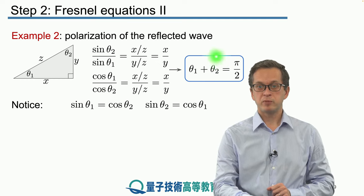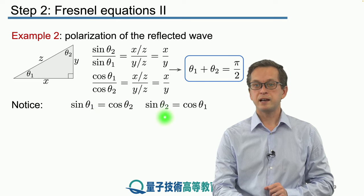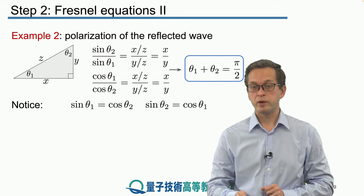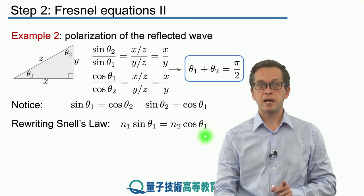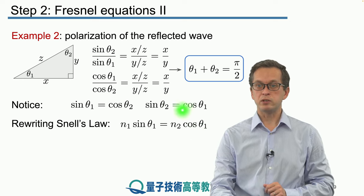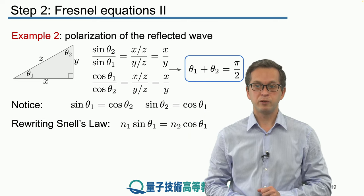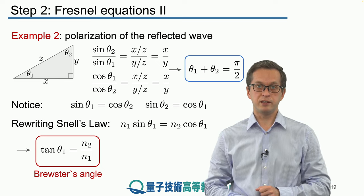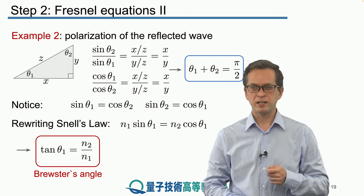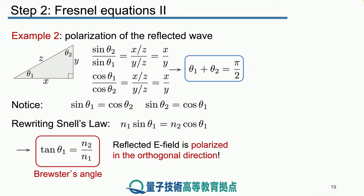We can see from these expressions that sin θ1 equals cos θ2 and sin θ2 equals cos θ1. Rewriting Snell's law with this substitution, we obtain the simple result: tan θ1 = N2/N1. This tells us that the reflected E field is polarized in the orthogonal direction when the angle of incidence θ1 is given by arctan(N2/N1). This special angle is called Brewster's angle.